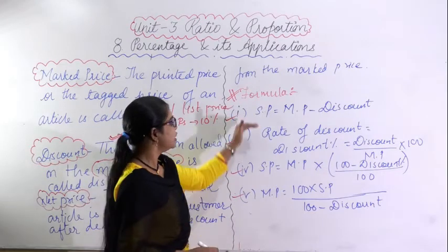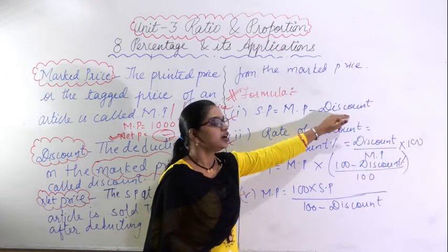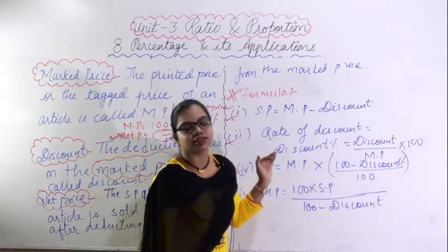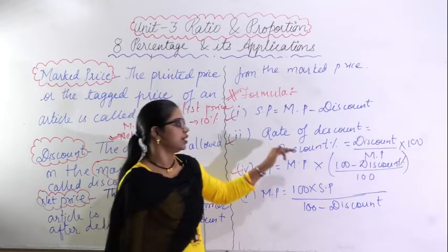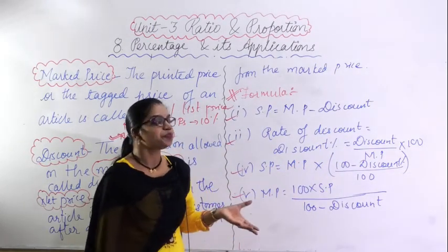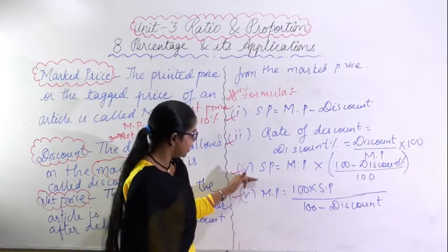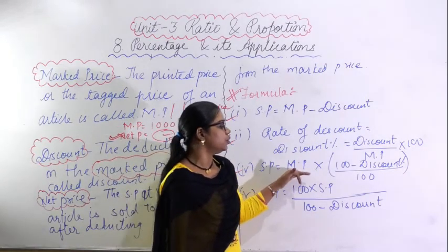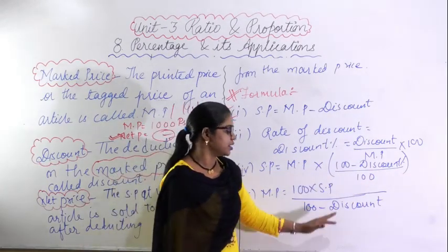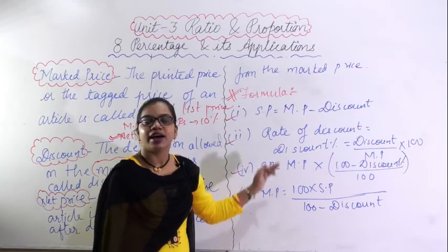Note down these formulas for solving questions. Selling Price = Mark Price − Discount. Discount% = (Discount / Mark Price) × 100. Also: SP = MP × (100 − Discount%) / 100, and MP = (100 × SP) / (100 − Discount%). You will understand these formulas better when you solve the exercise questions.